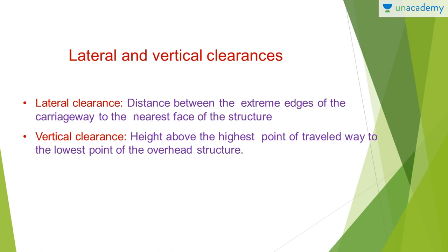Next, let us have a look at lateral and vertical clearances. Lateral clearance is the distance between the extreme edges of the carriageway to the nearest face of the structure. Vertical clearance is the height above the highest point of the travelled way to the lowest point of the overhead structure.